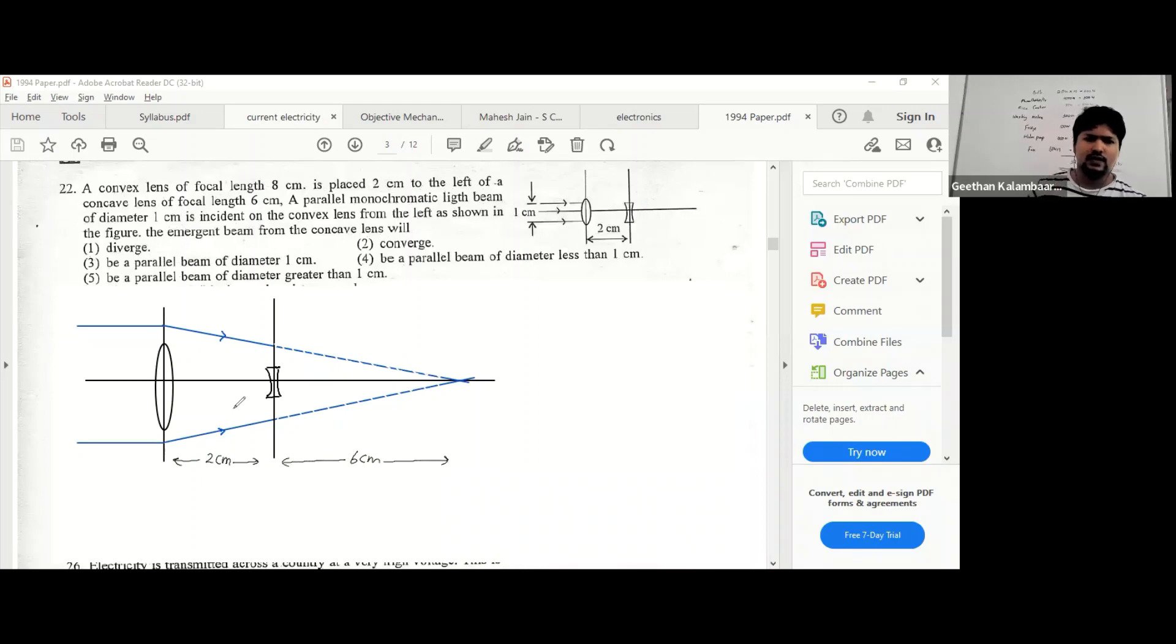Now you all should understand this, you all should know this. You can't say that you don't know how to draw this - that's a big lie. So everyone can do this. The focal length of the concave lens is six centimeters. This one is two - yeah sorry, this one is eight, this one is six.